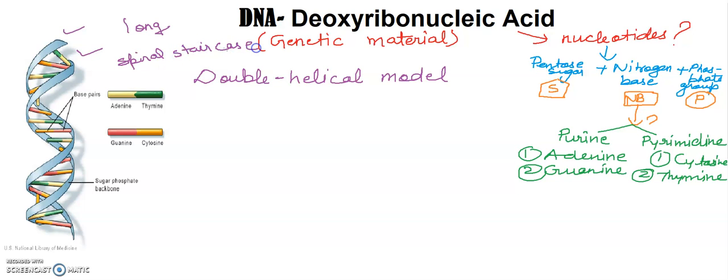You can write here double helical model of DNA. And the sugar and phosphate units form the backbone. Here it is written in the diagram, and paired nitrogen bases form the center here.